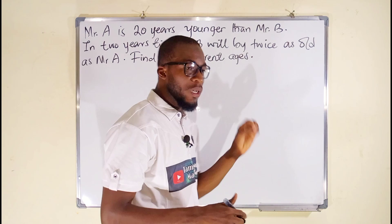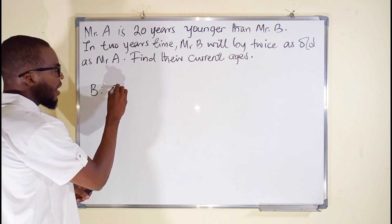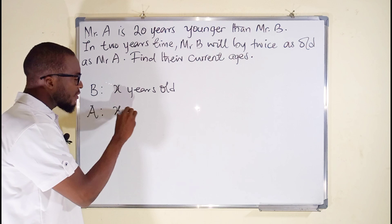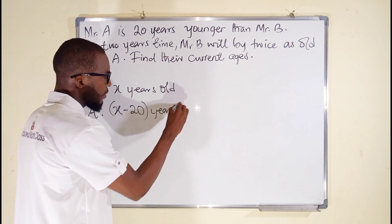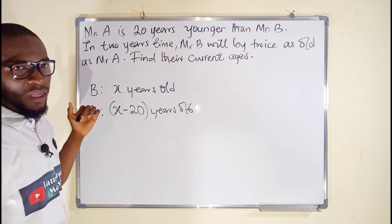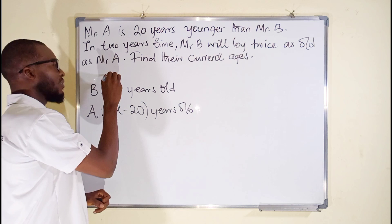Currently we don't know their ages, but we know Mr. A is 20 years younger than Mr. B, so Mr. B is older. Suppose Mr. B is x years old — that means Mr. A will be x minus 20, because whatever the age of Mr. B is, you subtract 20 to get the age of Mr. A. This represents the current year.